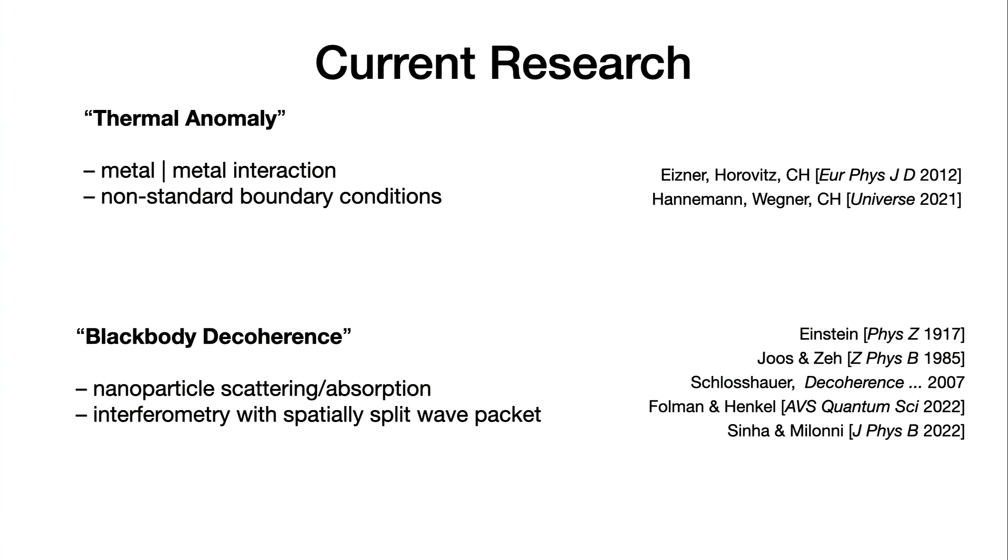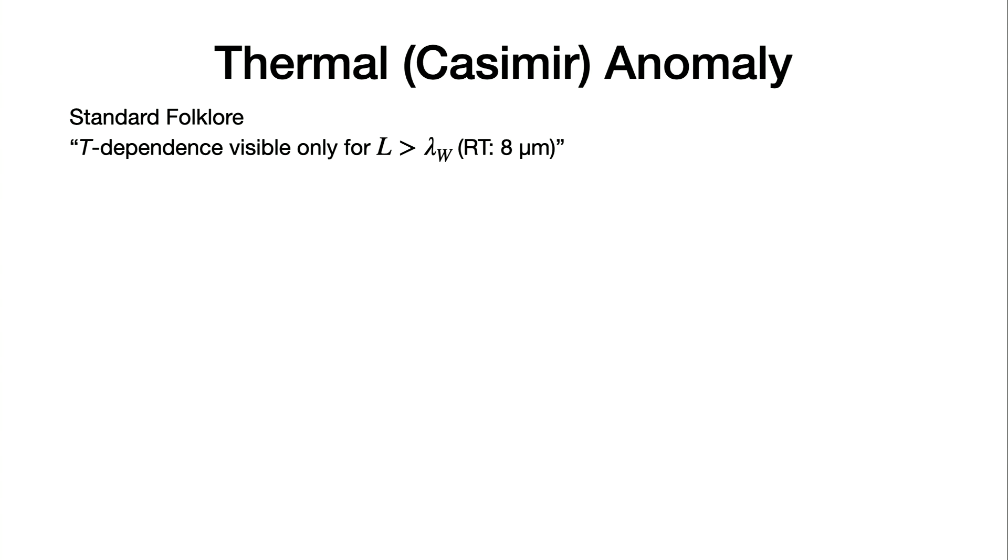The name thermal anomaly is a discussion about computing the Casimir interaction between metals and taking into account both the fact that they are at finite temperature and that they have a finite conductivity. It's a kind of lossy material. If it were not lossy, it would not radiate. What we have been doing in the last few years is to play with non-standard boundary conditions. I will explain to you why we took this liberty and then what we got out of it. The other topic is about decoherence due to blackbody radiation.